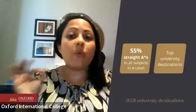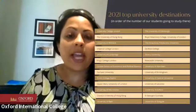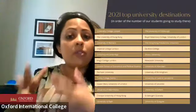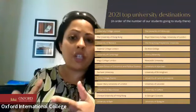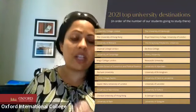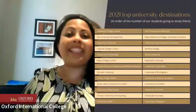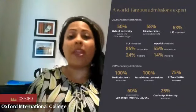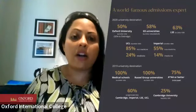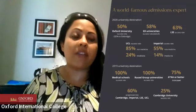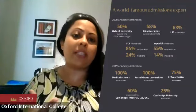In 2021, 55% of our students had straight A* grades in all A-level subjects, and we were not listed by The Times among schools that inflated results. In 2021 you can see the list of universities our students attended. 2021 was also very difficult for university applications, but 2022 has been the toughest of all — and we expect this pattern to continue for another two to three years.